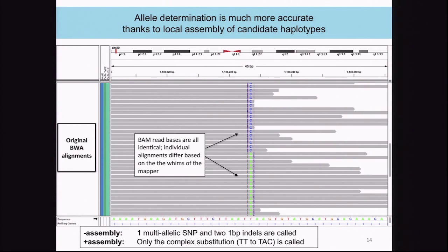Here's another example of how reassembly works. In the original BAM file it looks like there might be an insertion, a SNP, another potential SNP, and an insertion. Without reassembly you'd call one multi-allelic SNP and two one-base-pair indels. However, after reassembly you can clearly see that from a TT it's actually a complex substitution to a TAC.